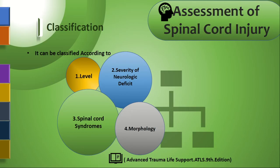The most common classification of spinal cord injury is divided into four levels: first is level-wise, second is the degree of neurological deficits, third is spinal cord syndromes — complete and incomplete injuries, and fourth is morphology.